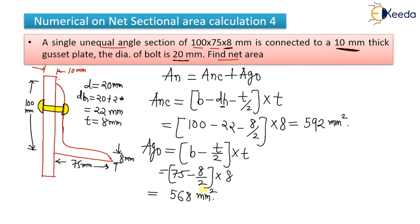We have calculated the gross area of outstanding leg and the net area of connected leg. So just add them together and you will get your net area. So I will put it here. Net area, it is nothing but A_NC plus A_GO. That is, what is A_NC? It is 592 plus what is A_GO? It is 568. So if you add them together, it will come around 1160 mm square. So it is very simple numerical.